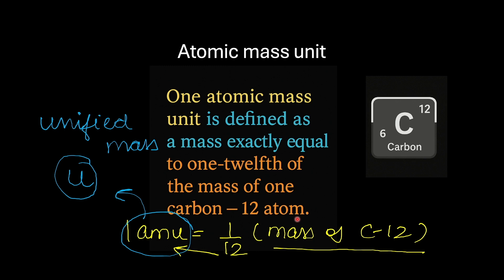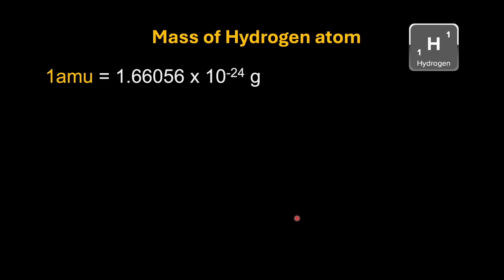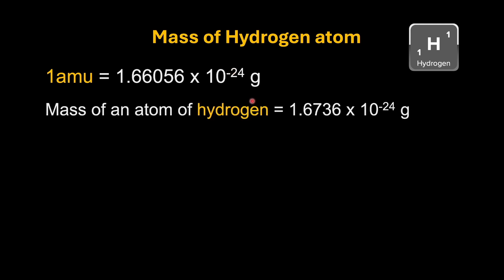Now, what if we want to find the mass of a hydrogen atom in AMU? One AMU is one-twelfth the mass of the carbon-12 isotope, which works out to 1.66056 × 10⁻²⁴ grams. The mass of one hydrogen atom can be measured using sophisticated techniques and comes out to be 1.6736 × 10⁻²⁴ grams.